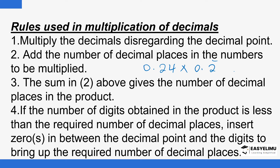When you remove the decimal point, 0.24 becomes 24 and 0.2 becomes 2, because zeros appearing before numbers don't really count. So ideally this is just 24 by 2. You disregard the decimal point and then multiply the numbers as they are, giving you 48.